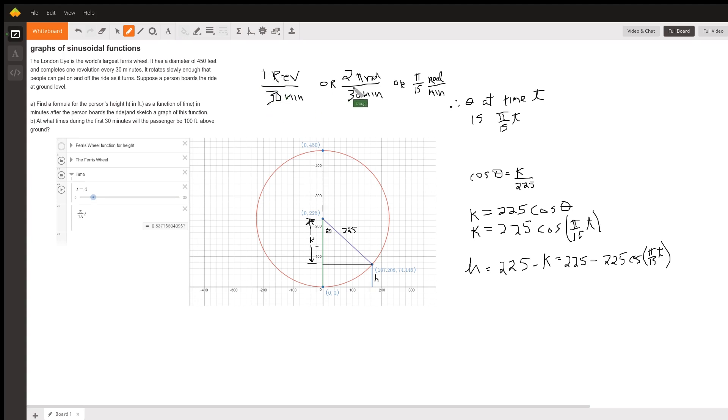Which is the same as 2π radians every 30 minutes, or π/15 radians per minute. So that means that this angle theta right here, after one minute, it will be equal to π/15.